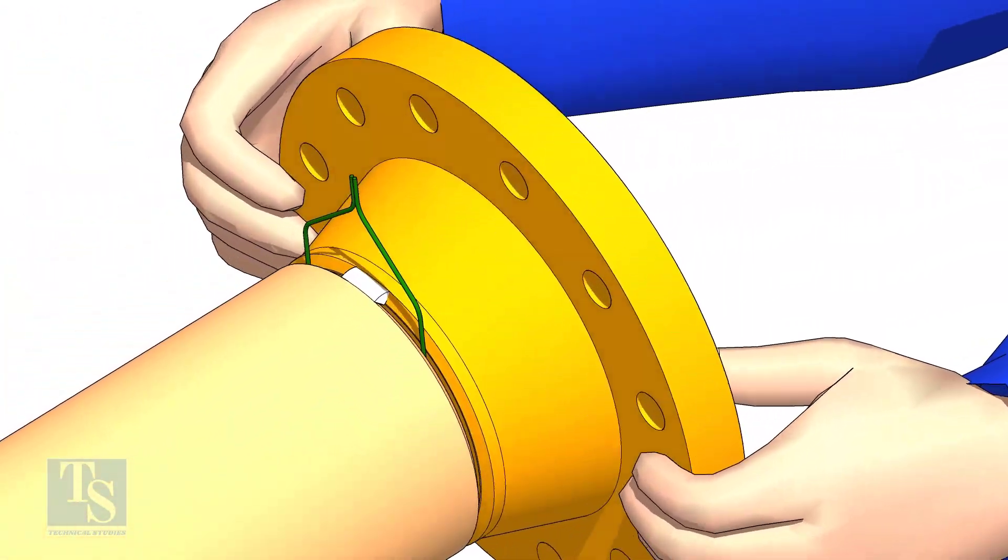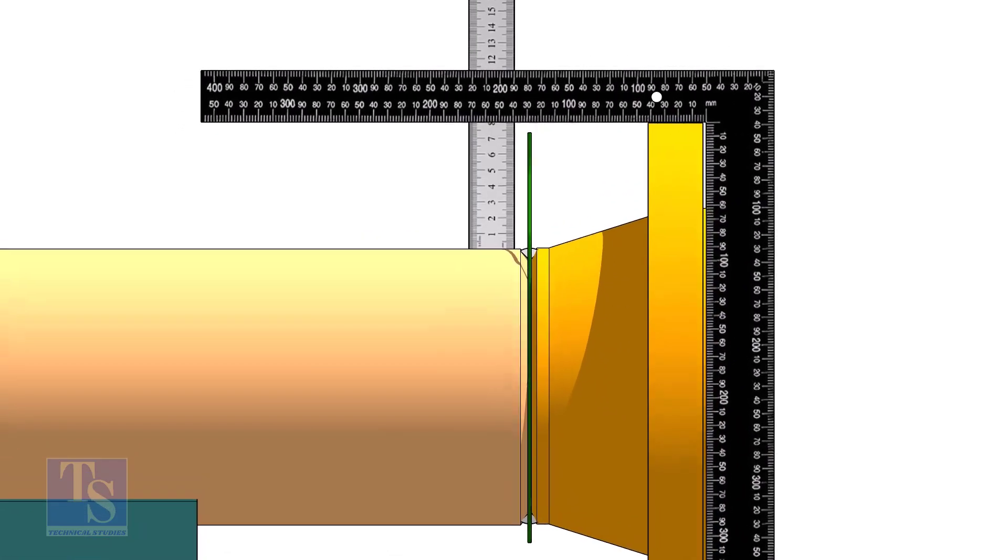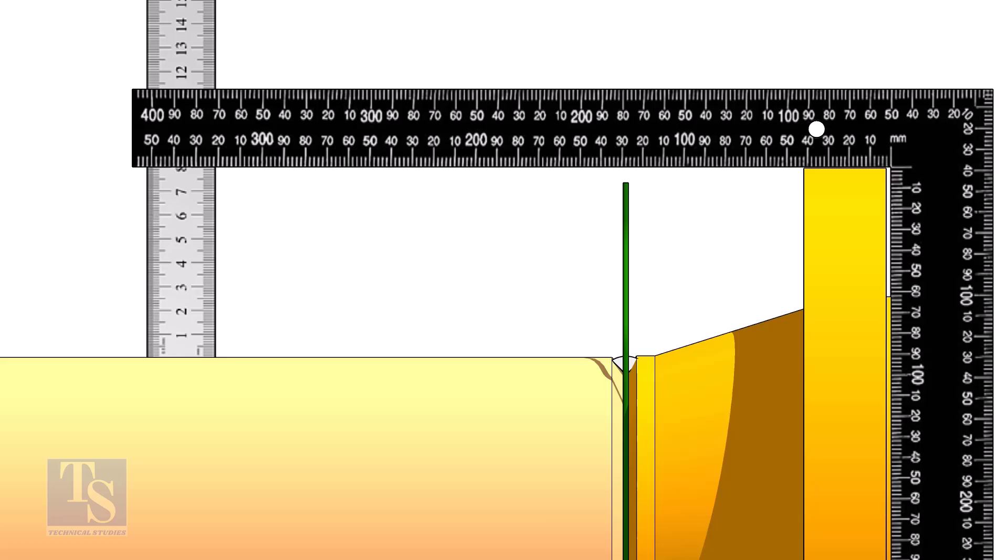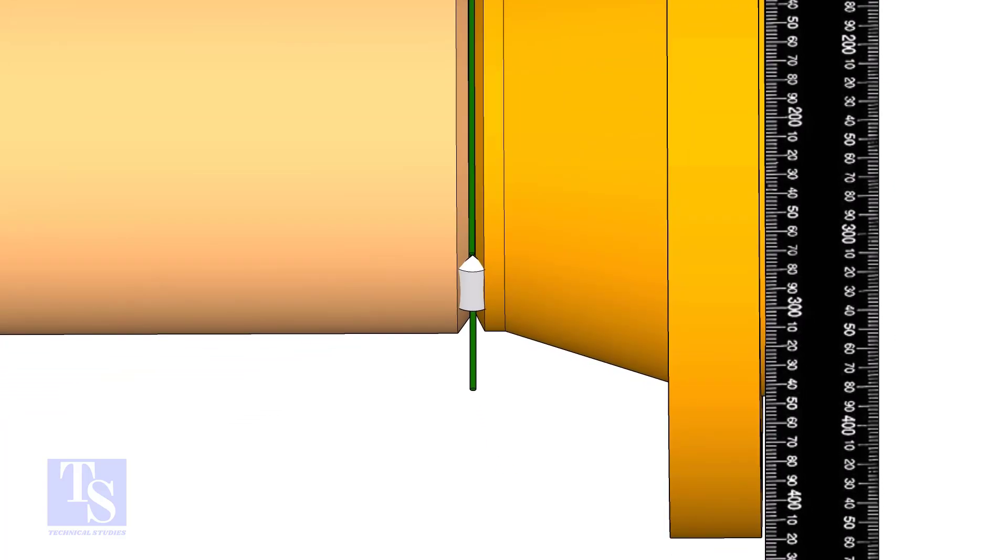Hold the flange with a gap rod in the joint, tack weld on top side of the joint. Check the squareness of flange face to the pipe as shown. Tack weld at the bottom side of the joint.